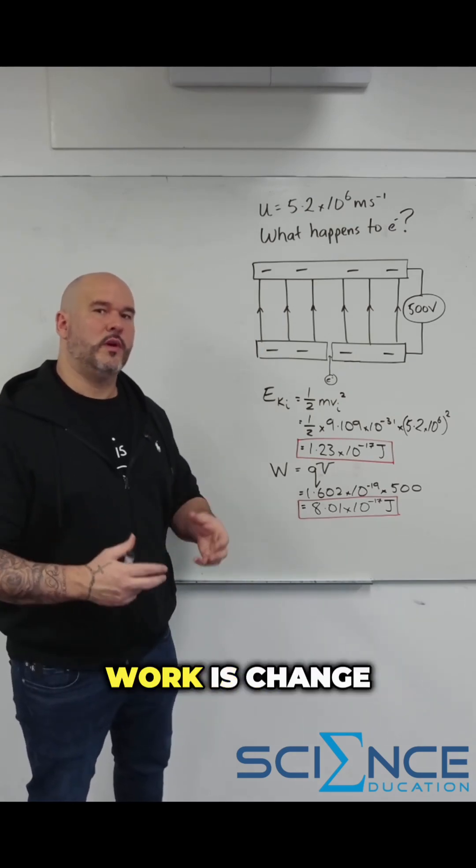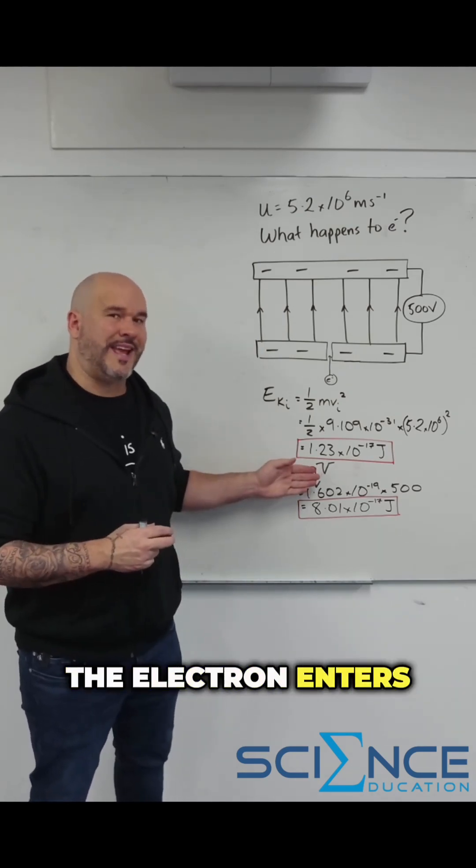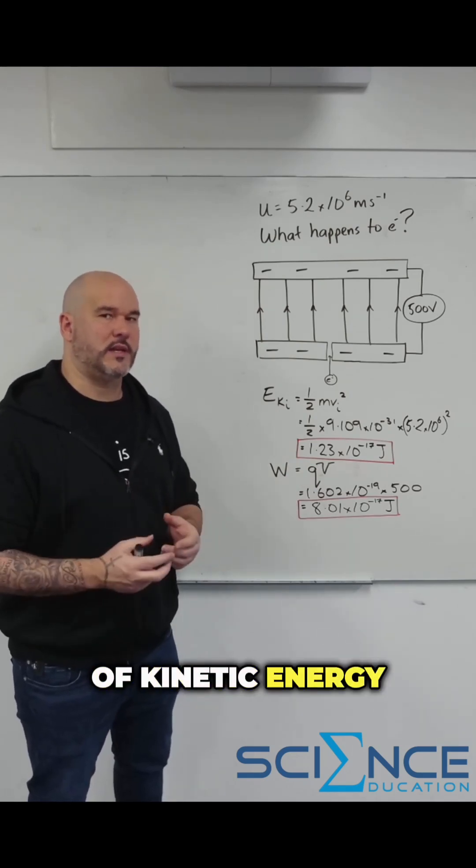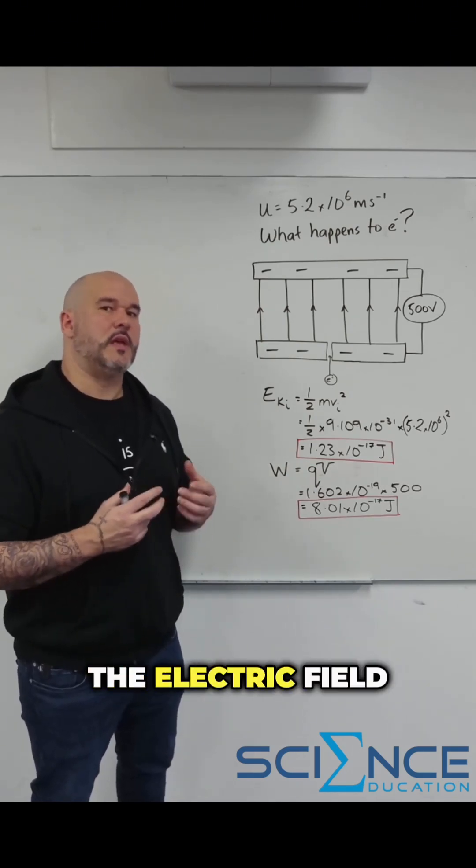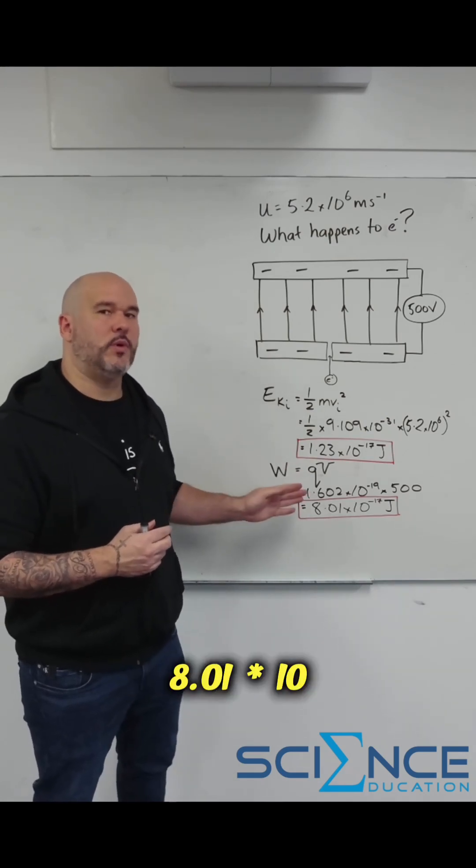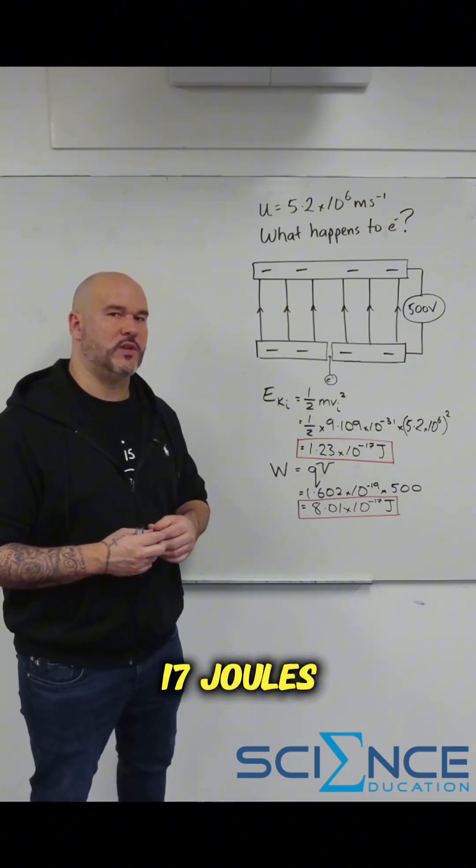Remember what work is. Work is change in energy. The electron enters with 1.23 times 10 to the minus 17 joules of kinetic energy. And between the plates, the electric field has the capacity to change that energy by a maximum of 8.01 times 10 to the minus 17 joules.